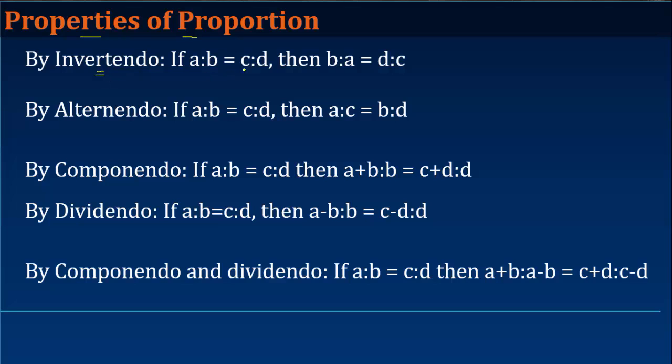By invertendo, if a is to b is equal to c is to d, then what we find is that b is to a is equal to d upon c. So let us say if we write this: a is to b as 5 upon 6 is equal to 10 upon 12, maybe, right.